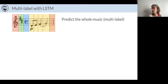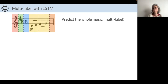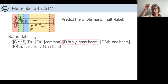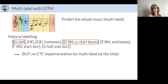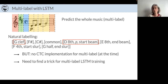If you want to predict the whole music — the point of OMR — you have to go to what we call multi-label, because in natural labeling you don't have a simple sequence of symbols but a sequence of lists of symbols, since within some frames you can have several symbols piled up. The problem is there was no CTC implementation for multi-label at the time we were using this architecture. Now it exists, but it was quite a problem then, and we had to find a trick to train an LSTM on a multi-label task.